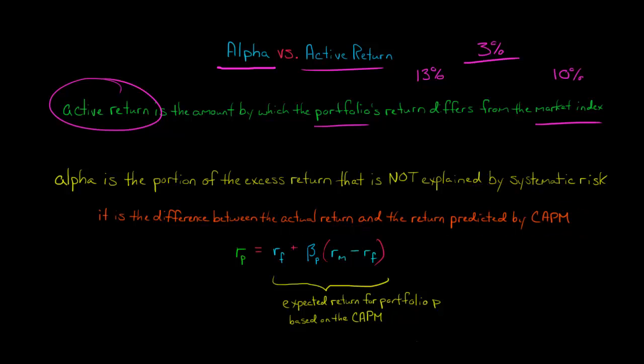So active return was the actual return and the difference between that and the market index's return. However, alpha is the actual return and the difference between that and the return predicted by CAPM.